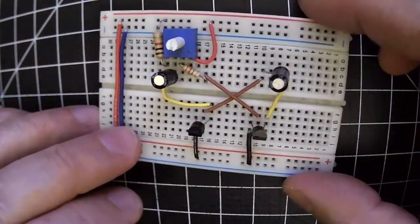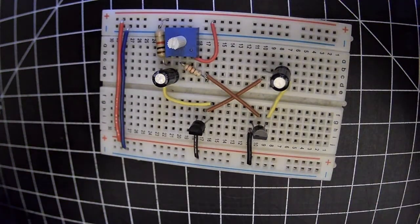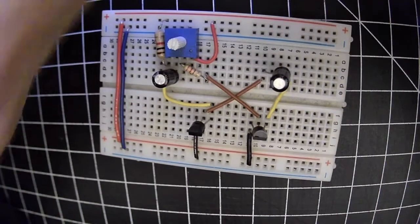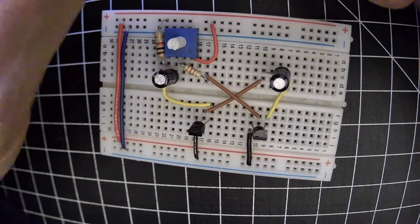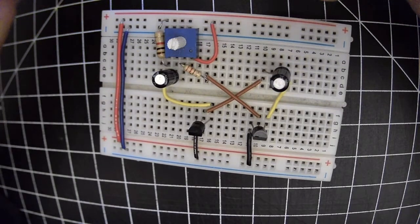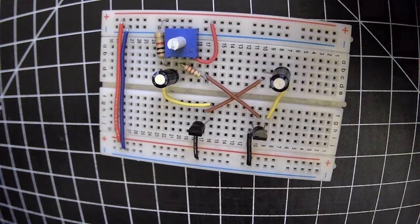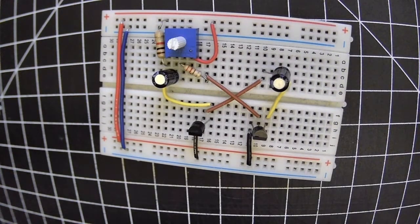And this junction of that more negative leg of the cap that's going to the base of that transistor is going to the red rail through a 10k resistor, which is brown, black, orange.